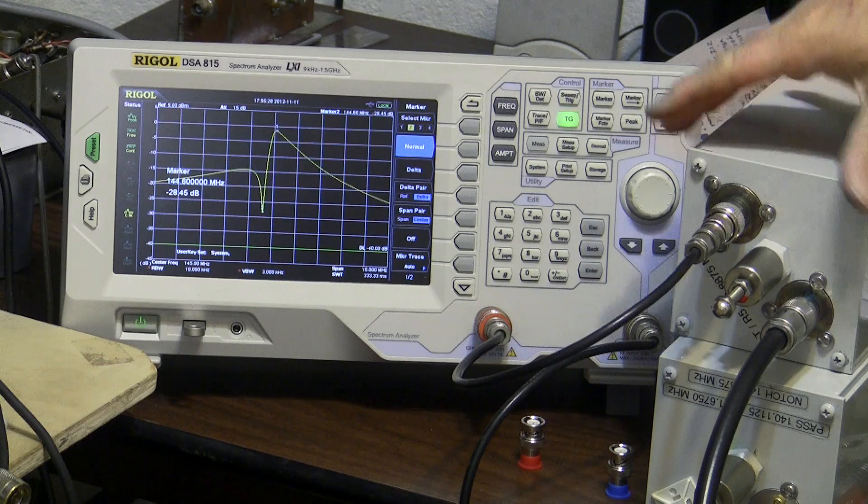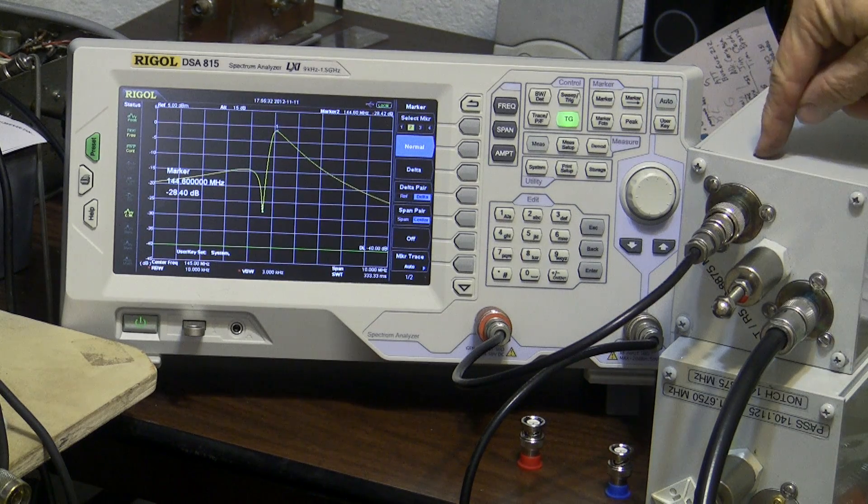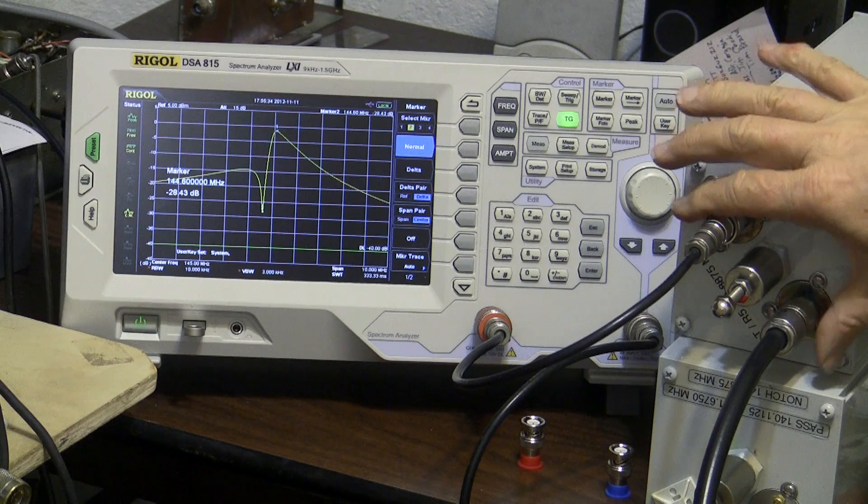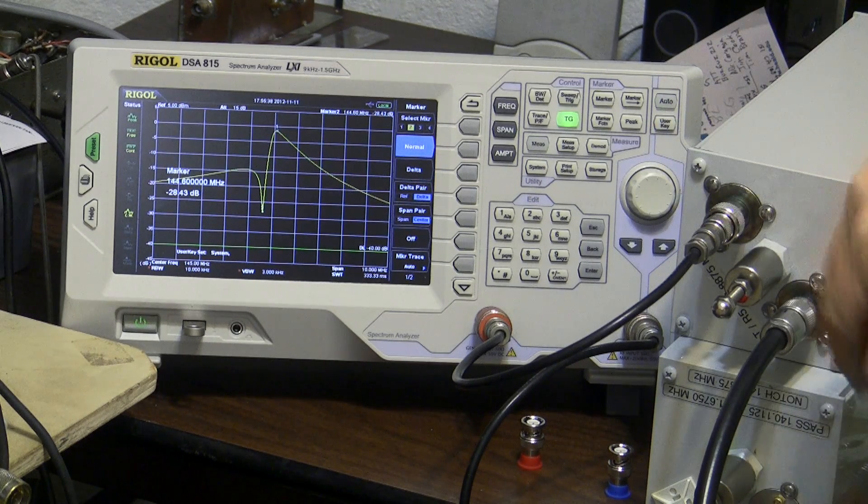We have seen this pair of cavities before: a pass notch on the bottom, a bandpass filter on the top with two connections here, and the bottom one just has a T connector.